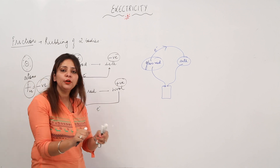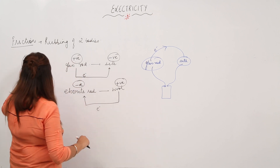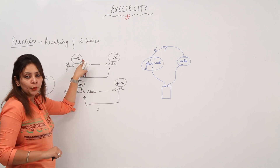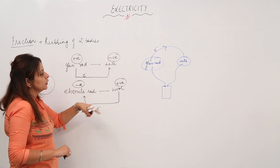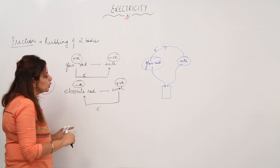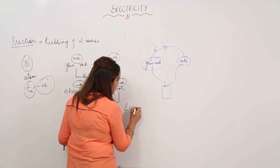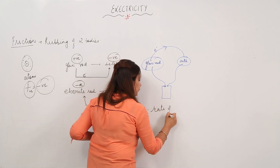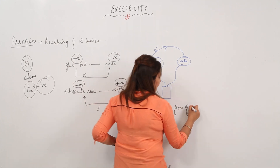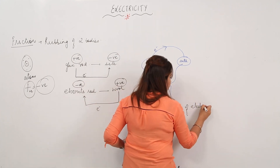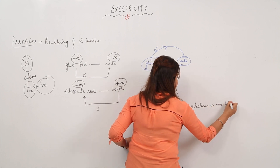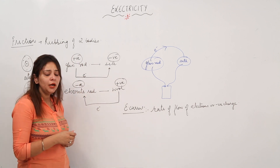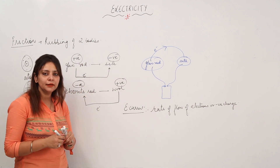Friction can produce electricity — just rubbing two bodies disturbs the electron distribution and they move from one place to another. The one losing electrons acquires a positive charge; the one gaining electrons acquires a negative charge. So if somebody asks you to define electric current, it is the rate of flow of electrons, or you can say the rate of flow of negative charge.